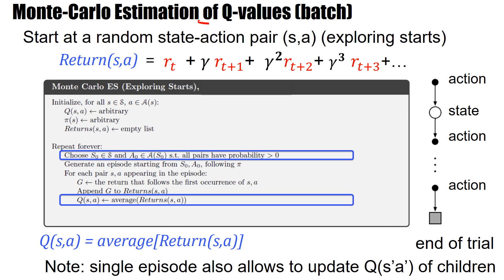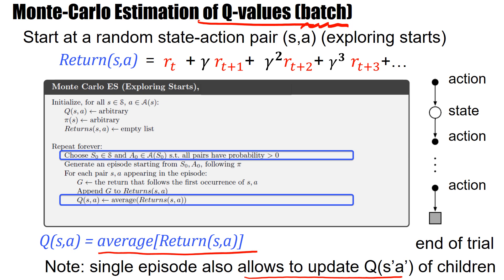Of course, you can do the same thing for Q-values — it's an average over many returns, over many episodes. Once you have played many episodes, you update. In that sense, I would assimilate this to a batch algorithm. A single episode allows you to update the Q-values of all the states you see on the fly, which looks like a very direct way to estimate Q-values.